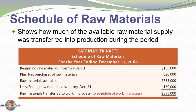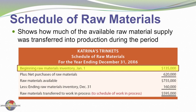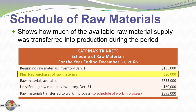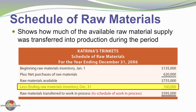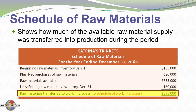Here I have a schedule of raw materials for Katrina's Trinkets, and it shows how much of the available raw material supply was transferred into production during a particular period. We begin with beginning inventory of raw materials, to which we add the net purchases of raw material for the period, giving us the raw materials available for use, from which we subtract our ending inventory, resulting in the raw materials transferred into work in process.